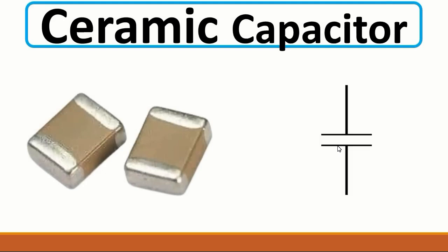Next we have ceramic capacitors — a very important component that you can also find everywhere in the motherboard. This is a non-polarized capacitor; as you can see, we don't have plus or minus. This kind of component is used to eliminate noise in the circuit and for filtering purposes. If you want to test it using a multimeter, you should put the multimeter to the buzzer option. If you get a low resistance or a buzzer reading, it means this component is bad.